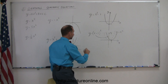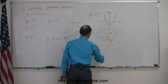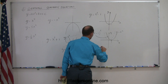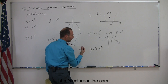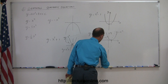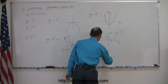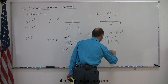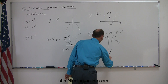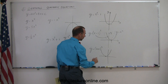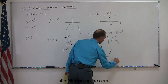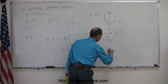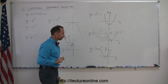If you have y equals the quantity x plus one squared, that would shift the whole parabola to the left, and it would just touch the x-axis at the point x equals negative one.